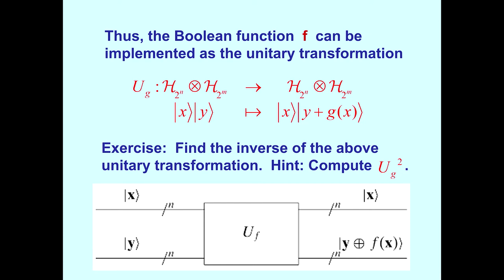Thus, the Boolean function f can be implemented in unitary form in the following fashion. Here's the first Hilbert space, meant to hold the arguments of the function. The second Hilbert space meant to hold the function values. And the plus denotes mod 2. And as an exercise, I suggest you find the inverse of the above unitary transformation. And the hint is, just simply compute U sub G squared. This is a unitary transformation because it simply permutes the basis elements. It's a permutation matrix, since it's orthogonal, and hence it's unitary.